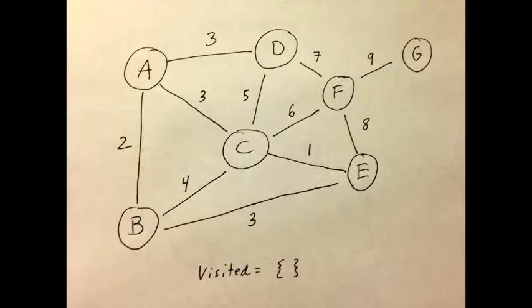Let's run Prim's algorithm on this graph. To start, create an empty list called visited. We will use this list to keep track of nodes that we have touched.